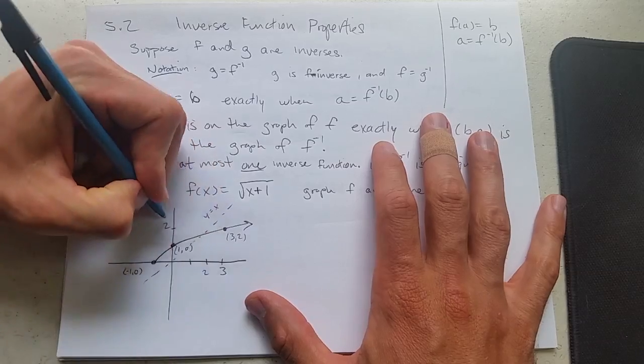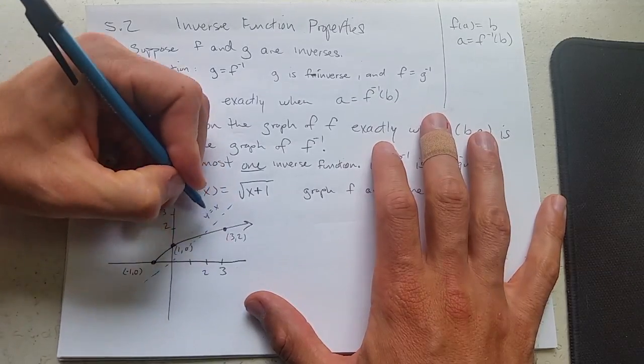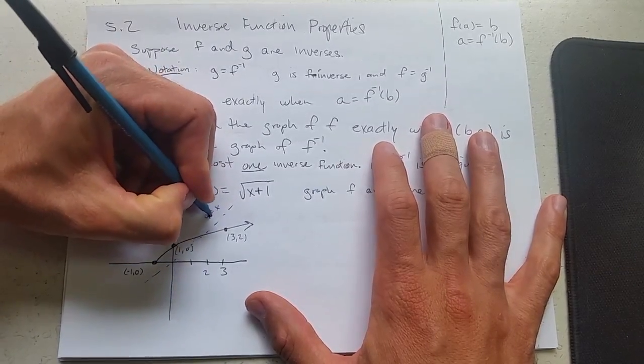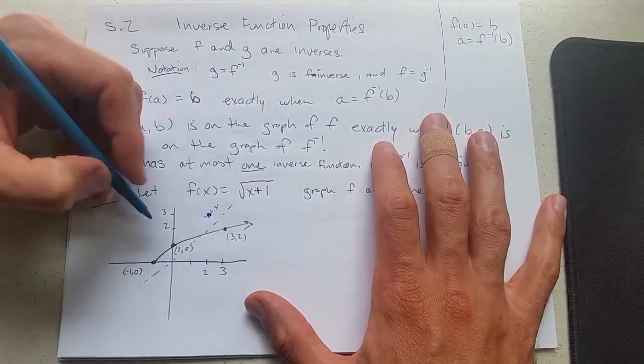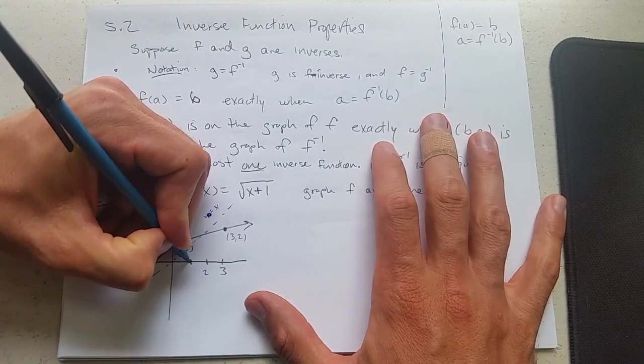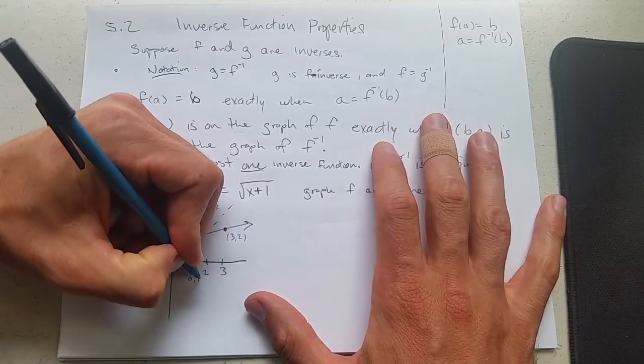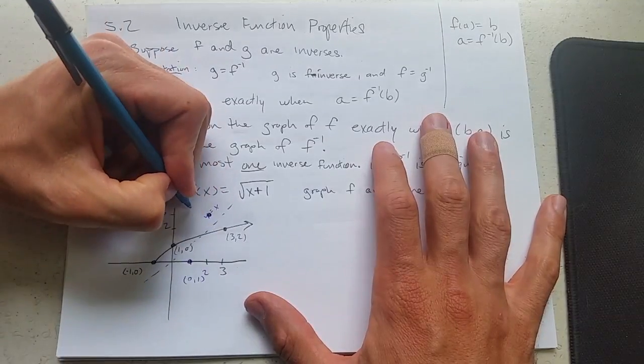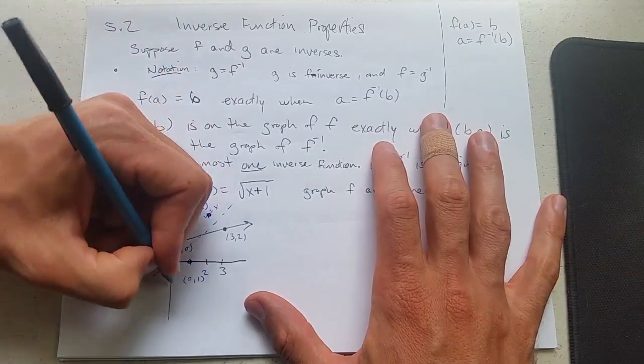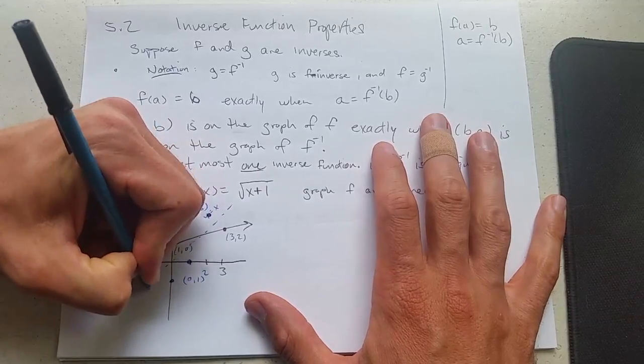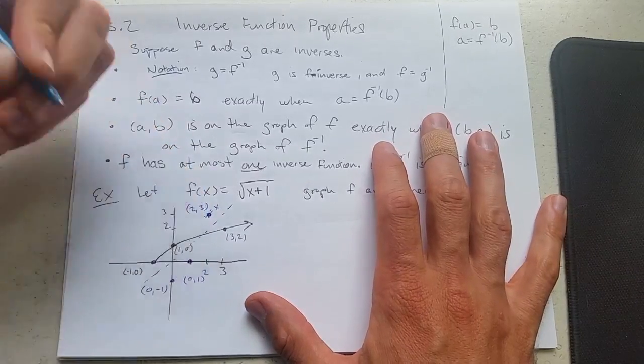So this point becomes 2, 3. And I have to write directly on top of there. 1, 0 turns into 0, 1. So we have 0, 1, 2, 3. Negative 1, 0 is 0, negative 1.